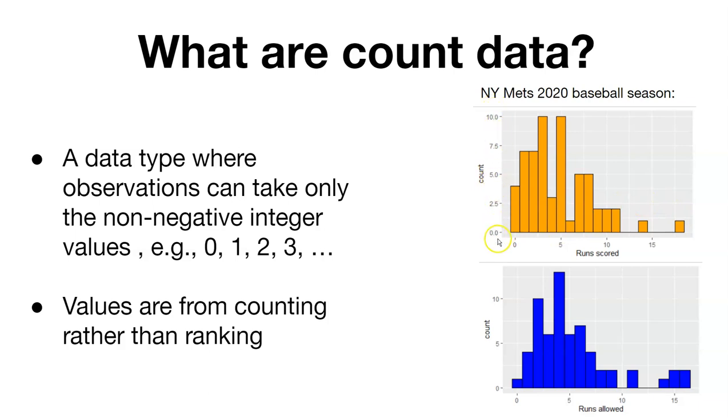You can see the number of runs scored by the Mets in 2020 is shown here with the number of games that they scored each number of runs on the y-axis. Generally it looks like the most number of runs they scored happened when it was five or three.